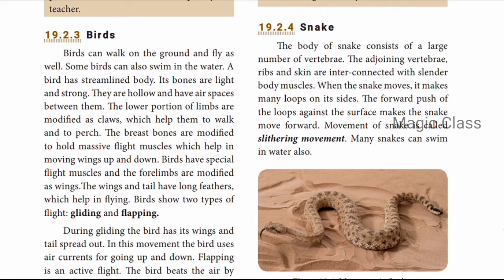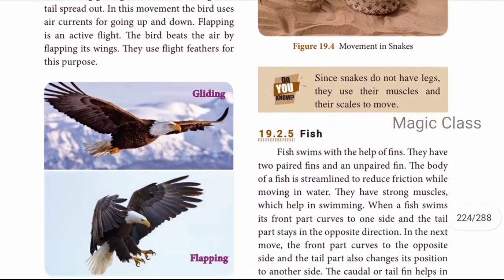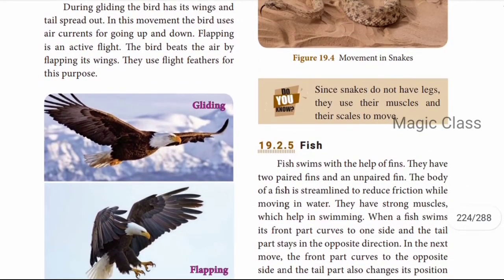The breast bones are modified to hold massive flight muscles which help in moving the wings up and down. The forelimbs are modified as wings. The wings and tail have long feathers which help in flying. Birds have two main types of flight movements: gliding and flapping.